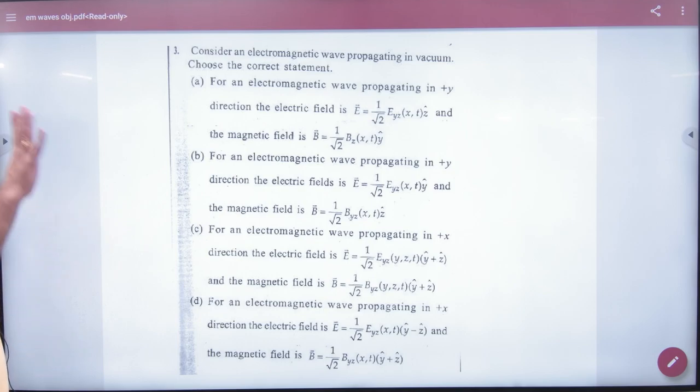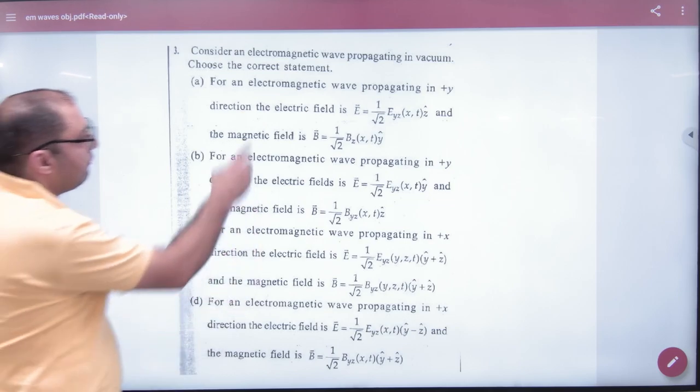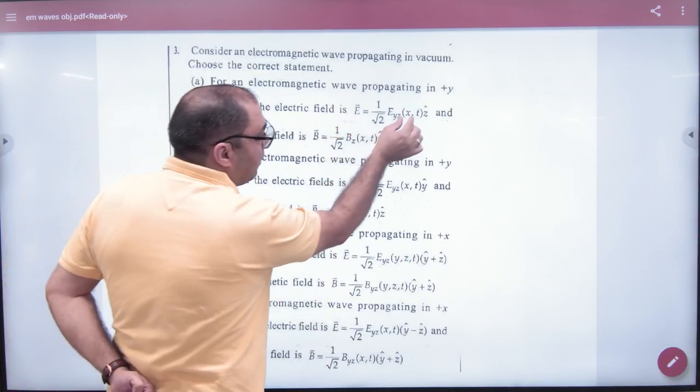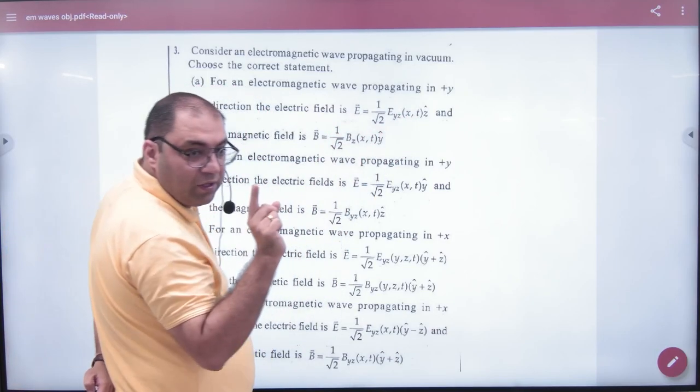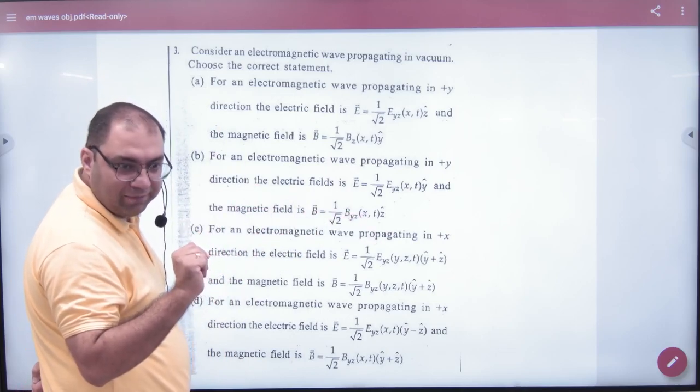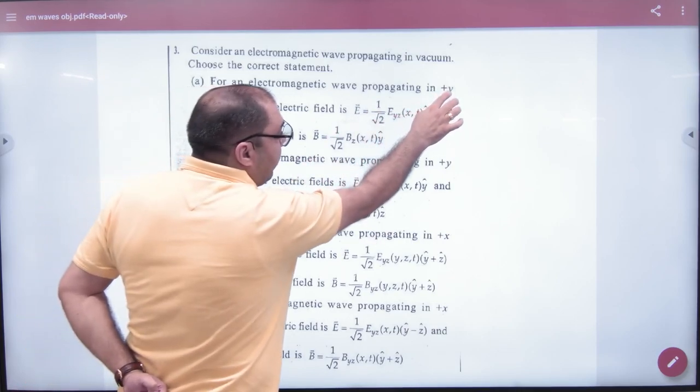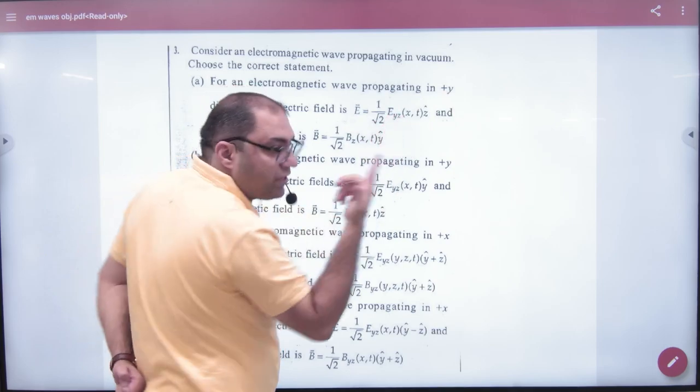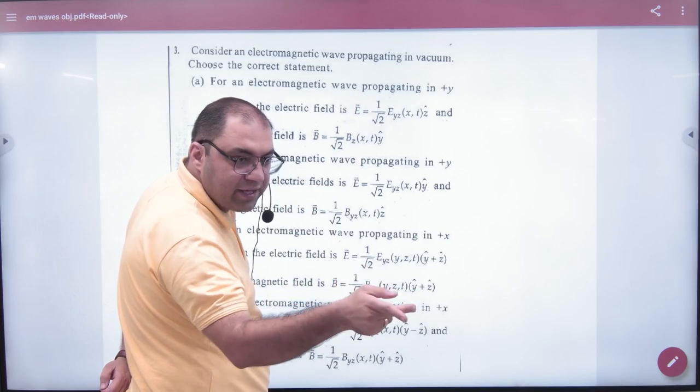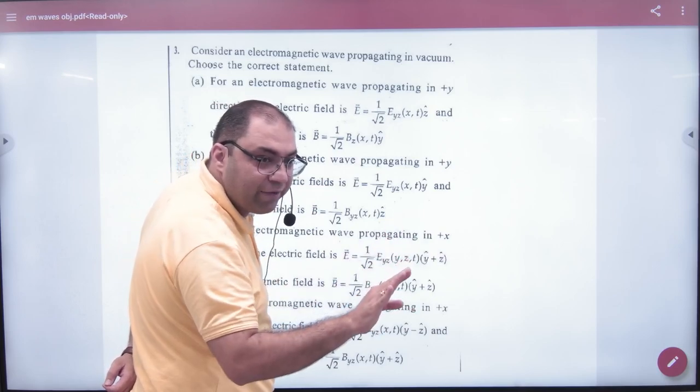E and B are always 90 degrees. Let's start. Wave propagation is in Y. Electric field is a function of x and t. Function of x and t means omega t minus kx form. Because propagation is in y, then how does electric field in x come here? So y should come here. Omega t minus kx means omega t minus ky should come here. So this answer is not possible.